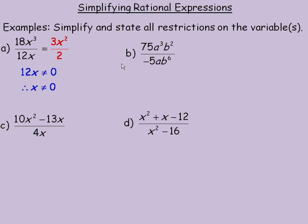For b, I would start with the 75 and the negative 5 and actually negative 5 divides into 75 evenly and it goes in negative 15 times. So my answer when I start to simplify here will start with a negative and the 15 of course is in the numerator. Now a cubed divided by a is a squared.